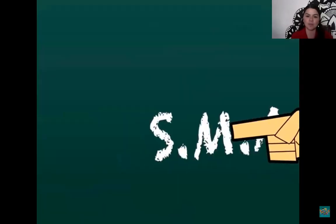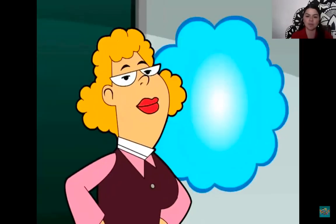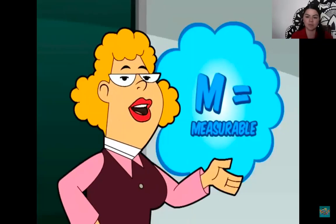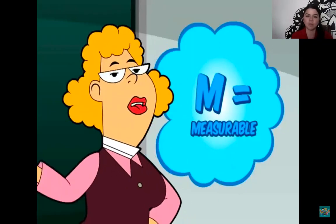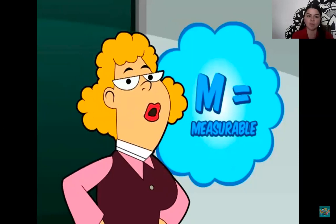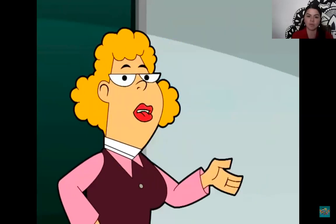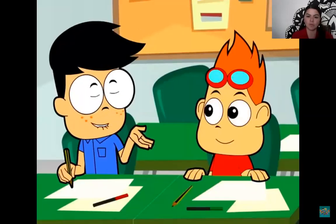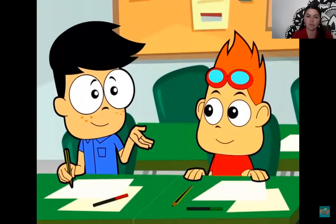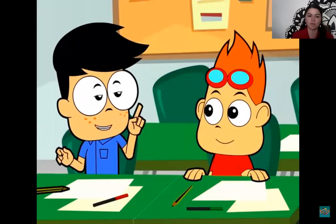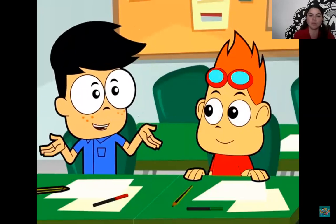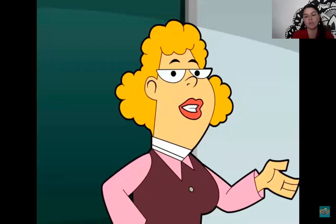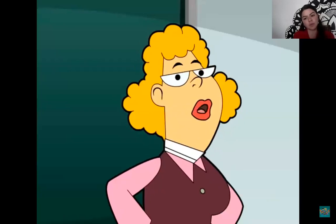M stands for Measurable. Barry's goal is measurable because he knows exactly how much he needs to save and how much he has each week to put into savings. He can see if he's meeting his goal or not because it is measurable. So if he spends money on something else, like a comic book, he would see how he has strayed off the plan. He can watch his money activity and see if he is staying with the plan or going off course.